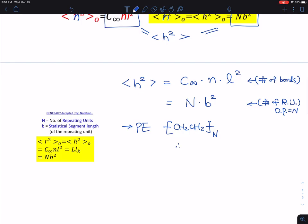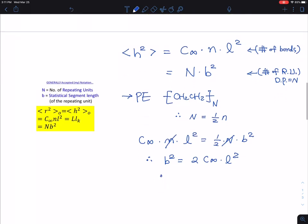So therefore, it's actually n, number of bonds, and the number of repeating units is one half of the number of bonds, right? So therefore, if I'm combining these two, characteristic ratio, nL square is half of the N and the b square, right?